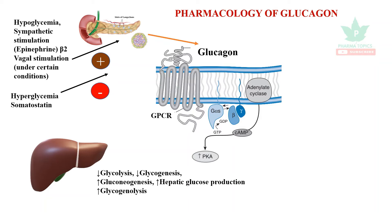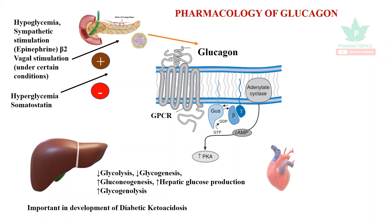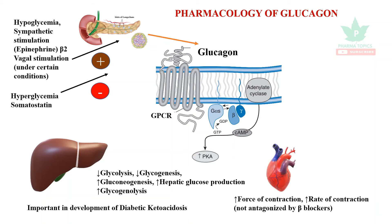In the liver, glucagon decreases glycolysis, decreases glycogenolysis, increases gluconeogenesis, and increases hepatic glucose production. It increases the breakdown of glycogen to glucose. Glucagon is also important in the development of diabetic ketoacidosis.